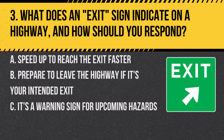Question 3. What does an exit sign indicate on a highway and how should you respond? A. Speed up to reach the exit faster. B. Prepare to leave the highway if it's your intended exit. C. It's a warning sign for upcoming hazards. Answer: B. Prepare to leave the highway if it's your intended exit. An exit sign is used to mark where a road departs from a highway.